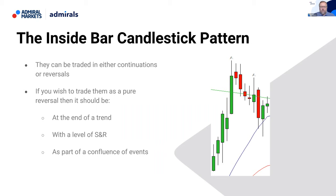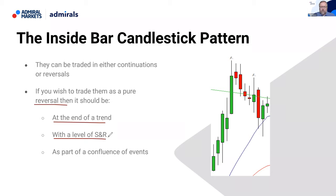Inside bars can be traded as either continuations of an existing trend or reversals — whether you're trading them on a monthly chart or a five-minute chart. It's all about context and confluence. Personally, if you wish to trade them as a pure reversal, you're looking at the end of a trend. There has to have been a good move and a particular level of support or resistance — and maybe as part of the confluence of events.